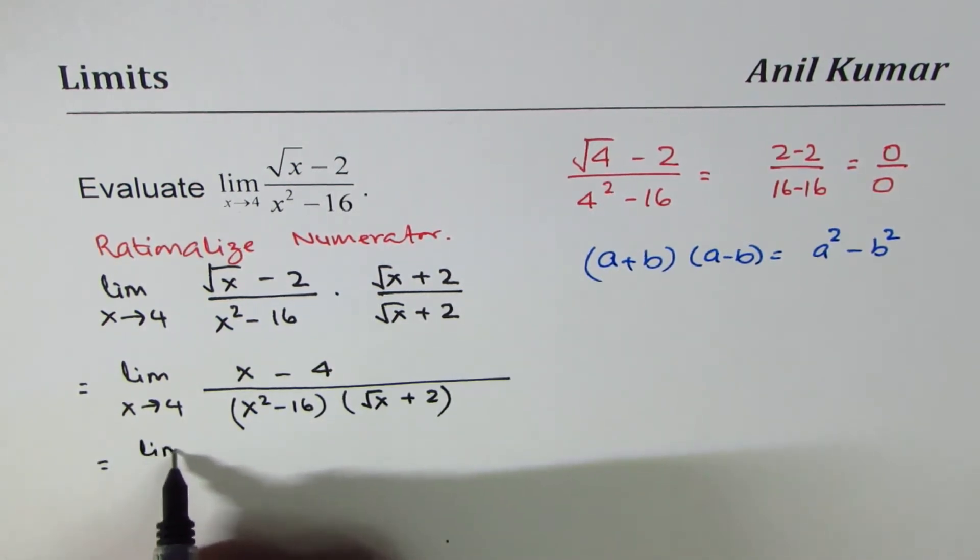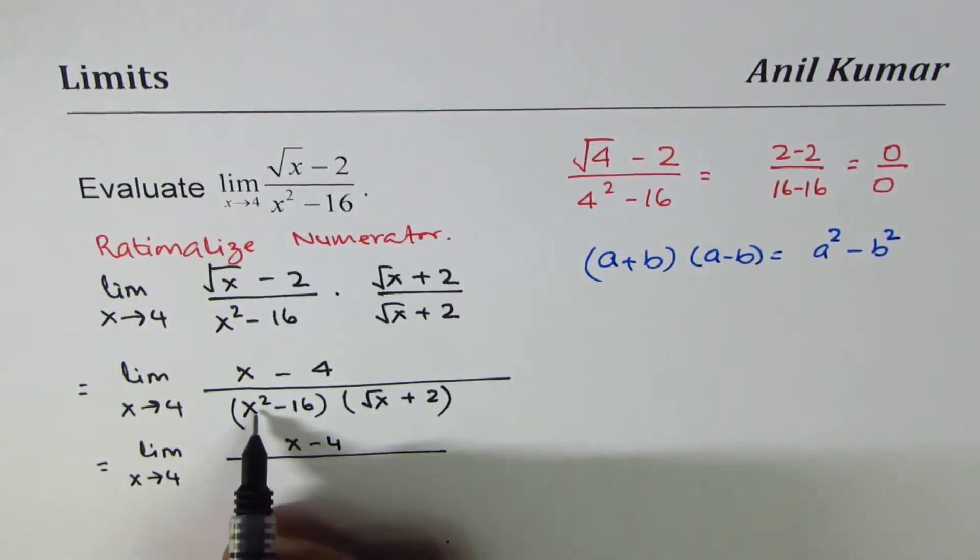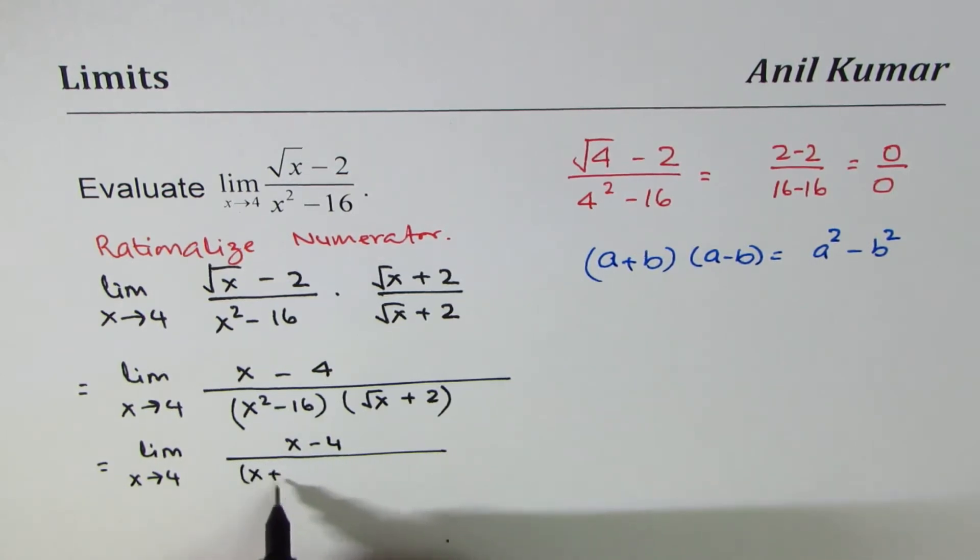So we have limit x approaches 4, numerator is x minus 4, denominator could be written as x squared minus 16, I am writing as x plus 4 times x minus 4, and we have square root of x plus 2.